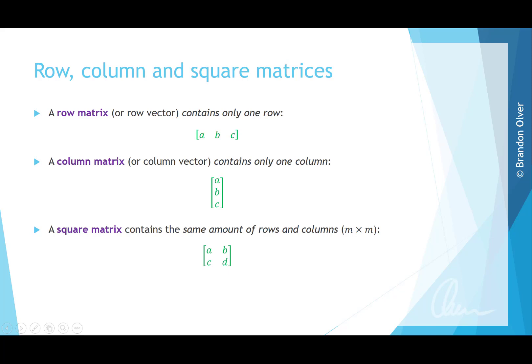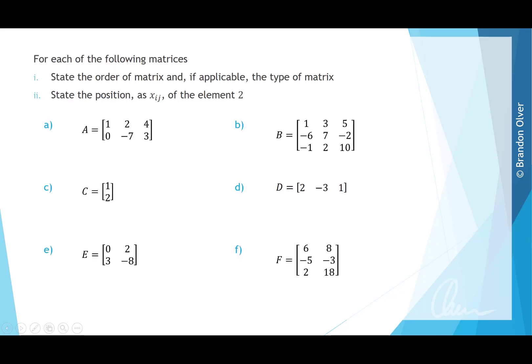Here we have a 2 by 2 square matrix. For each of the matrices shown, we want to state the order and, if applicable, the type. For matrix A, it has 2 rows and 3 columns, so it is a 2 by 3 matrix — just a rectangular matrix, not a row vector, column vector, or square matrix.